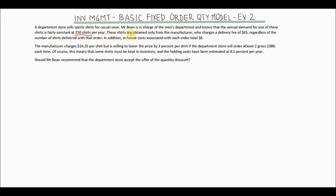These shirts are obtained only from the manufacturer, who charges a delivery fee of $65 regardless of the number of shirts delivered with that order. This is essentially a transportation charge: whether you place an order for five shirts or fifty shirts, the manufacturer will still charge $65. So per order, the delivery fee is $65.